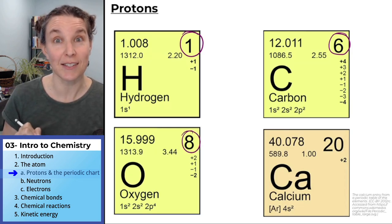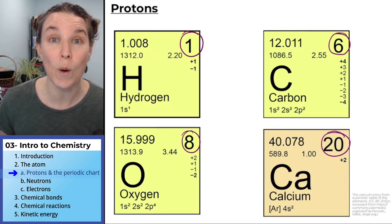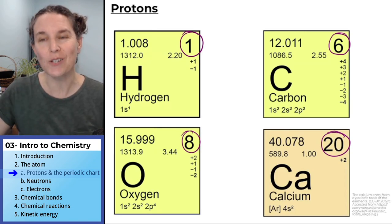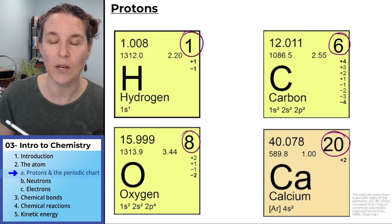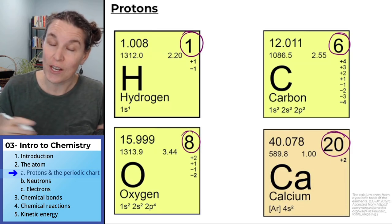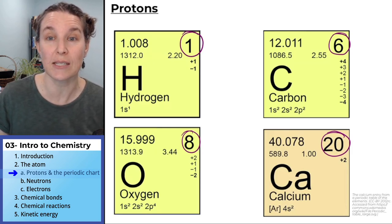Oxygen has eight protons, and calcium has 20 protons. All you have to do is find that number. If you change the number of protons, you change the element itself.